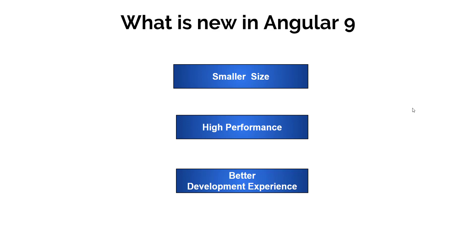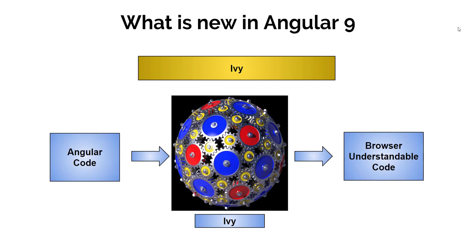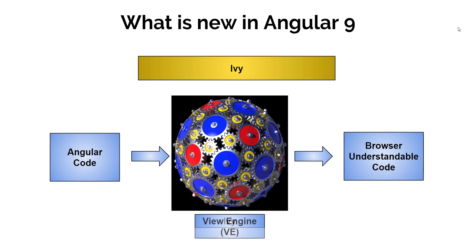For now let's quickly look at the key changes in Angular 9. If you are already working on Angular or following it, you are aware of Ivy — the big buzzword in the Angular world. So what is Ivy? Ivy is the main update of Angular 9. It is a new codename for the Angular compiler that converts Angular code into browser-understandable code. Before that it was called View Engine.